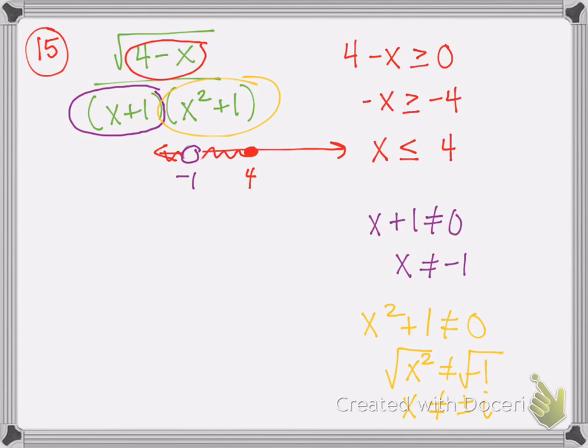So our domain for this one is graphed in this picture. We're going to go from negative infinity to negative 1, not include that, and group that with from negative 1 to positive 4. And put a bracket there, because this was less than or equal to, and it has the closed circle there. That's how you do number 15.